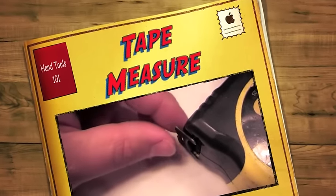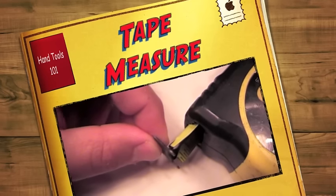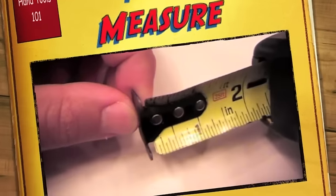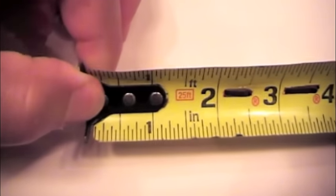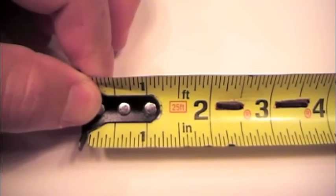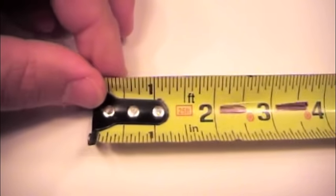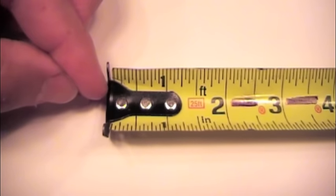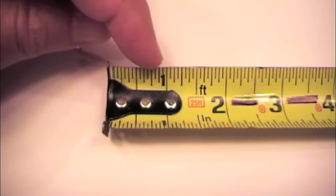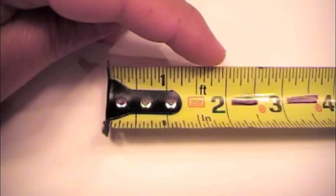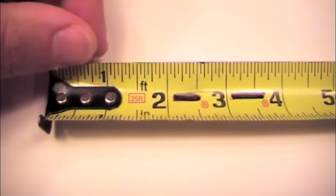Here we have a standard 25-foot tape measure. At the end of the tape measure, we have a little hook. As we extend the tape out of the tape measure, we see that we have standard numbers starting at the end would be zero. We have one inch, two inches, three inches, and so on.